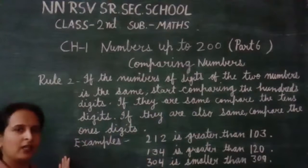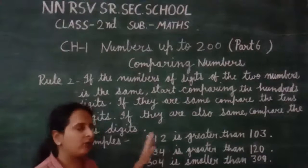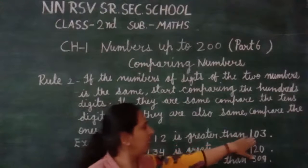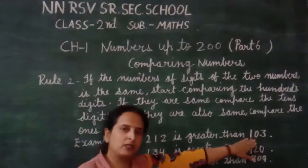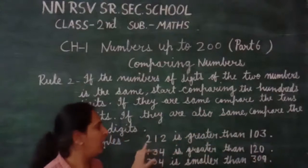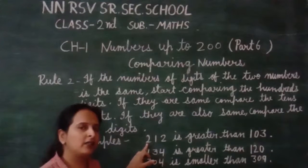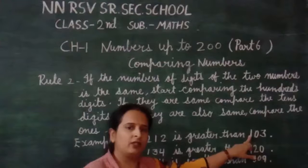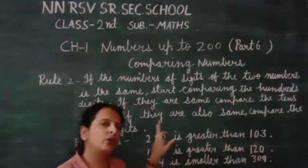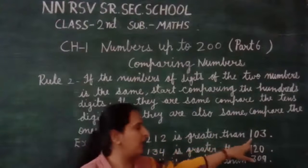Here is an example. 212 is greater than 103. Both are 3-digit numbers. First of all, we have to check the 100s digit. In 212, the 100s digit is 2, and in 103, the 100s digit is 1. So which is bigger? 2 is bigger. It means 212 is greater than 103.